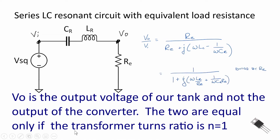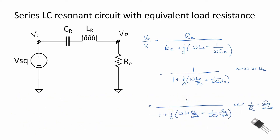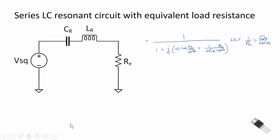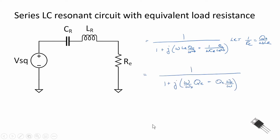Factoring out RE from the numerator, we obtain a simplified version of this equation. Next we're going to substitute one over RE equal to QE divided by omega naught times LR. The LR will cancel out in this part of the equation, and we'll also obtain omega naught squared in the numerator due to CR times LR, which is the definition of omega naught squared. This simplifies to one over one plus j times omega over omega naught times QE plus QE times omega naught over omega.